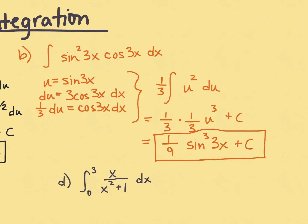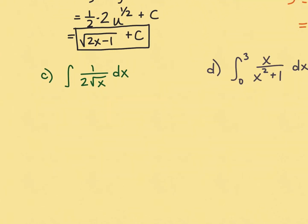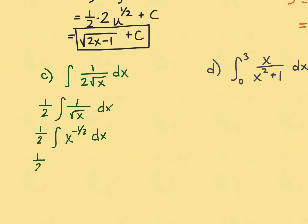Remember that with exponents on trig functions, we put the exponent in the middle — like sine cubed. For part c, we move the one half out front and reevaluate. This is actually just like problem a: one half the integral of x to the negative one half dx. Using the power rule for integration: add 1 and divide by one half which means multiply by 2. The result is the square root of x plus c — no u substitution required.